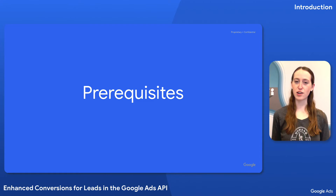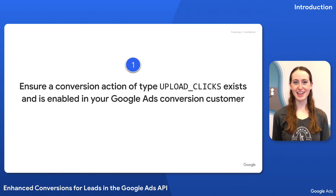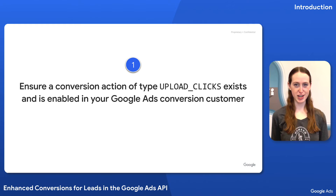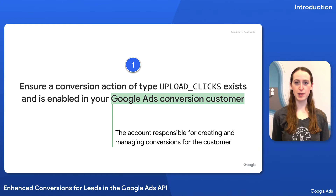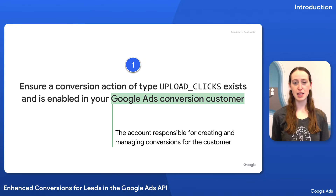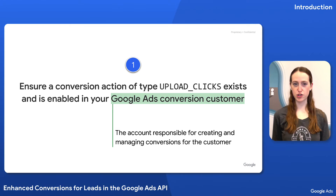Now that we understand the overall flow, let's talk about the prerequisites to making it happen. First, Enhanced Conversions for Leads requires making sure a conversion action of type Upload Clicks exists within your Google Ads conversion customer. This is the Google Ads account responsible for creating and managing conversions for the customer — it might be a Google Ads client account, or if you're using cross-account conversion tracking, a Google Ads manager account.